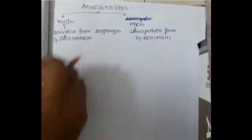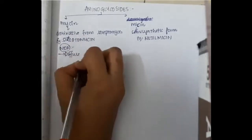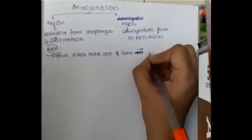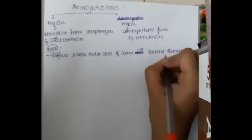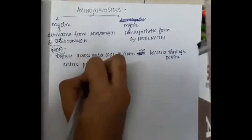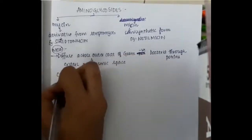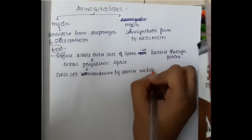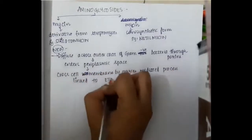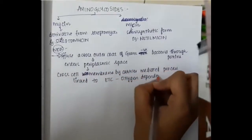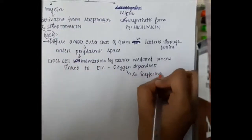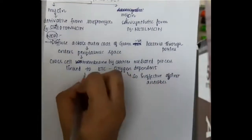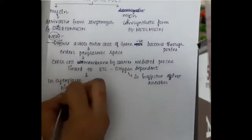Regarding the mechanism of action: aminoglycosides diffuse across the outer coat of gram-negative bacteria through porins, entering the periplasmic space. They then cross the cell membrane by a carrier-mediated process linked to an oxygen-dependent electron transport chain. This makes them ineffective against anaerobes.